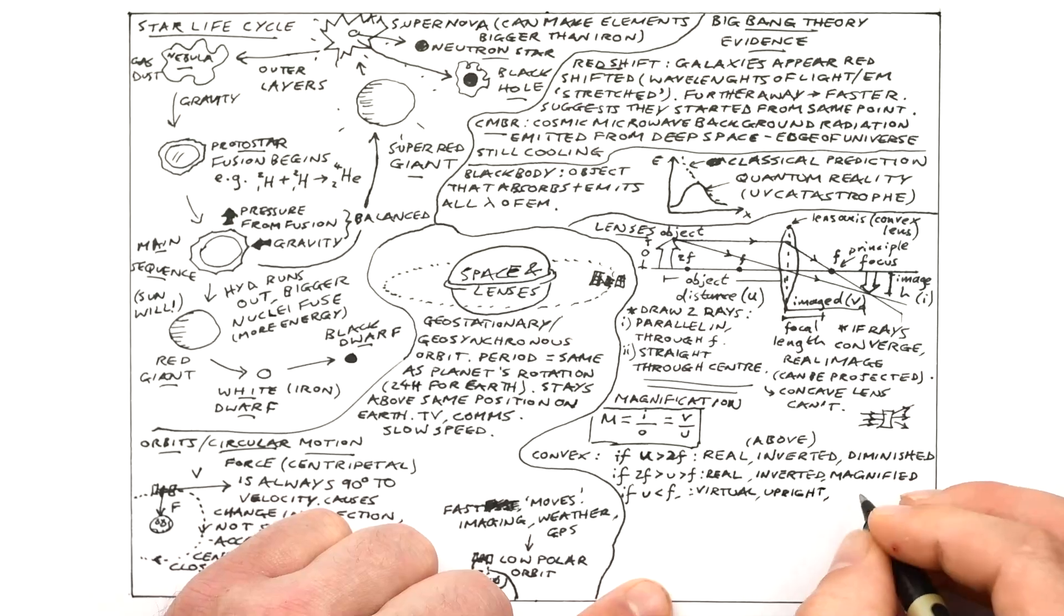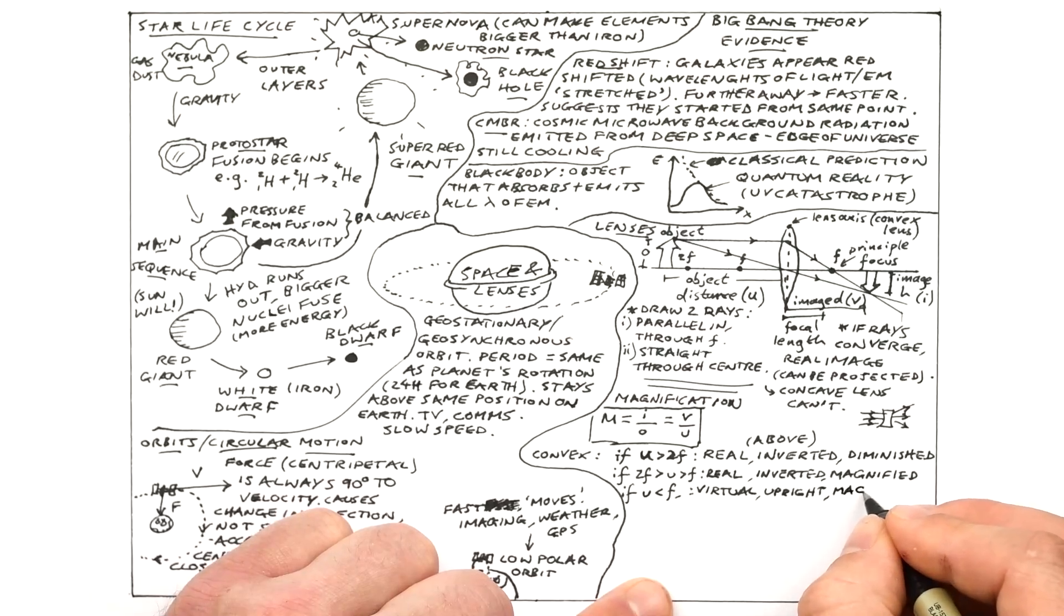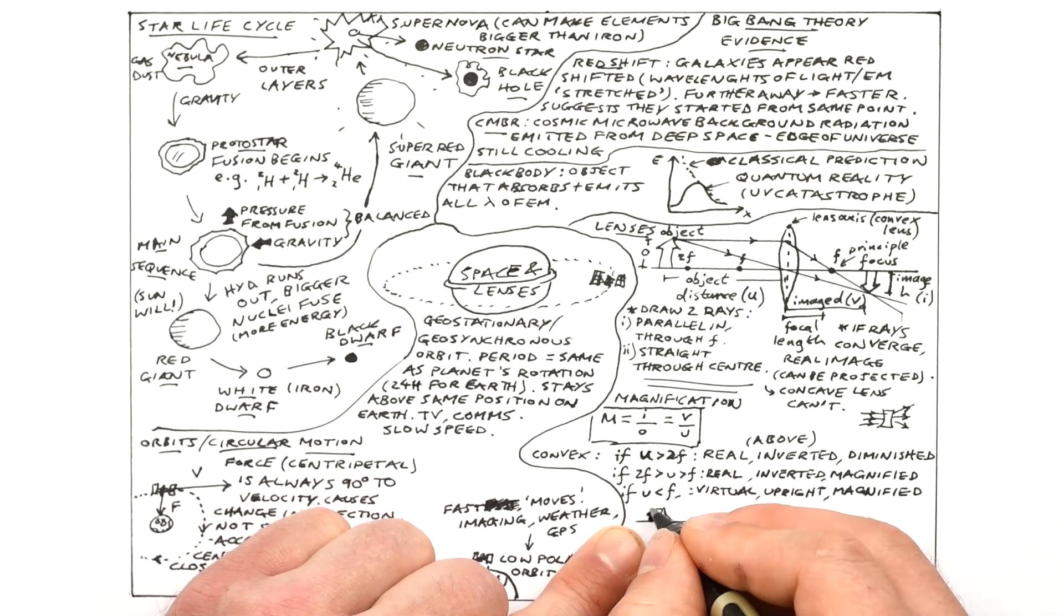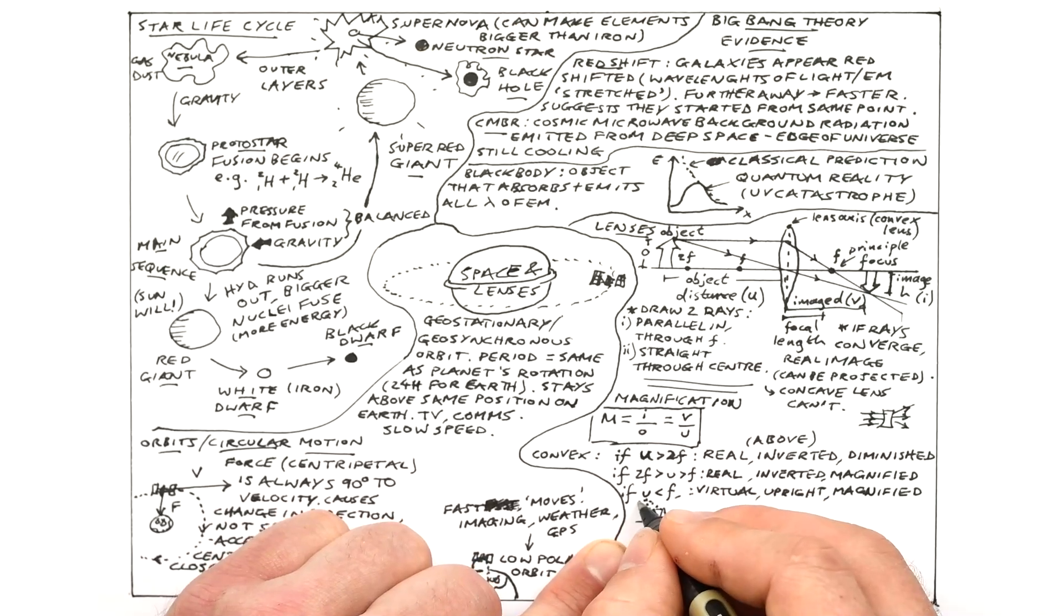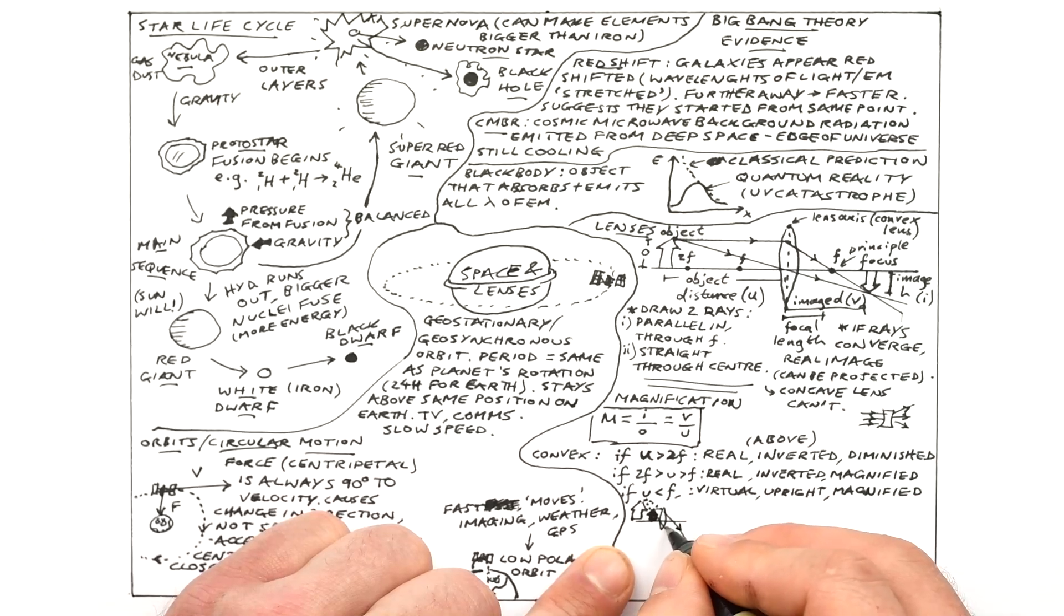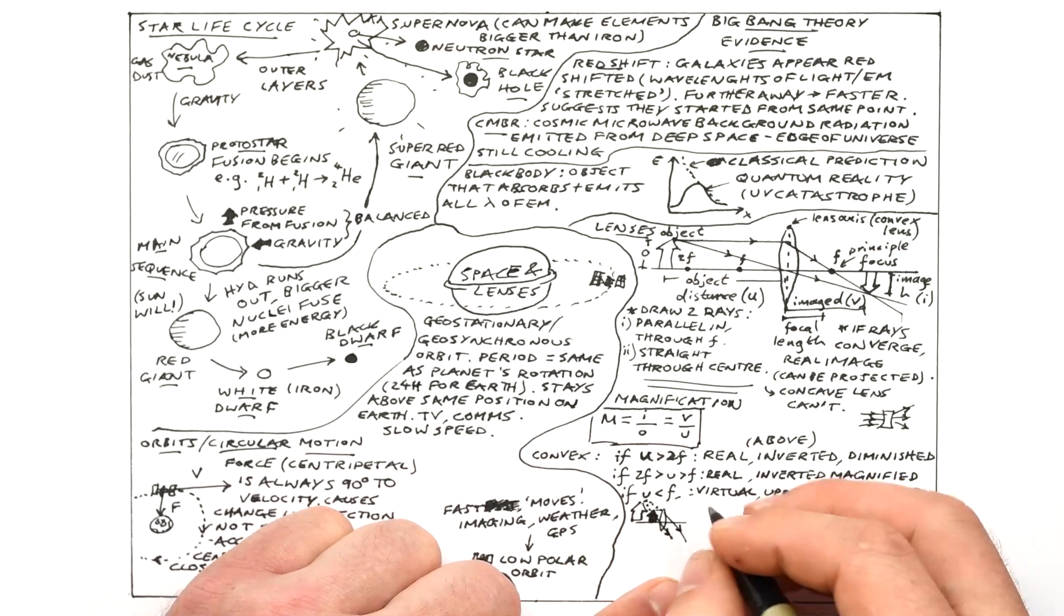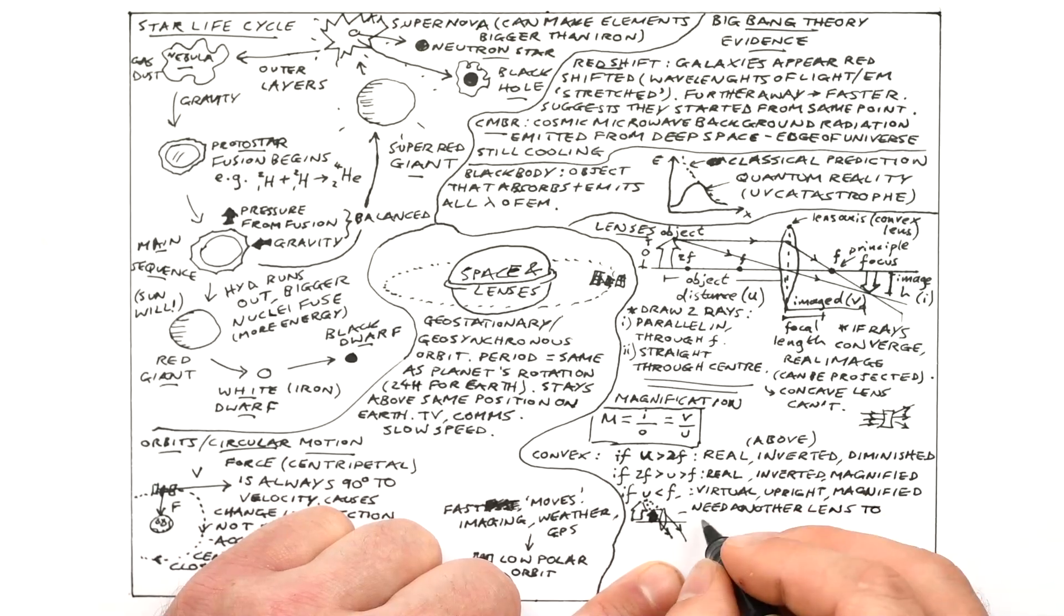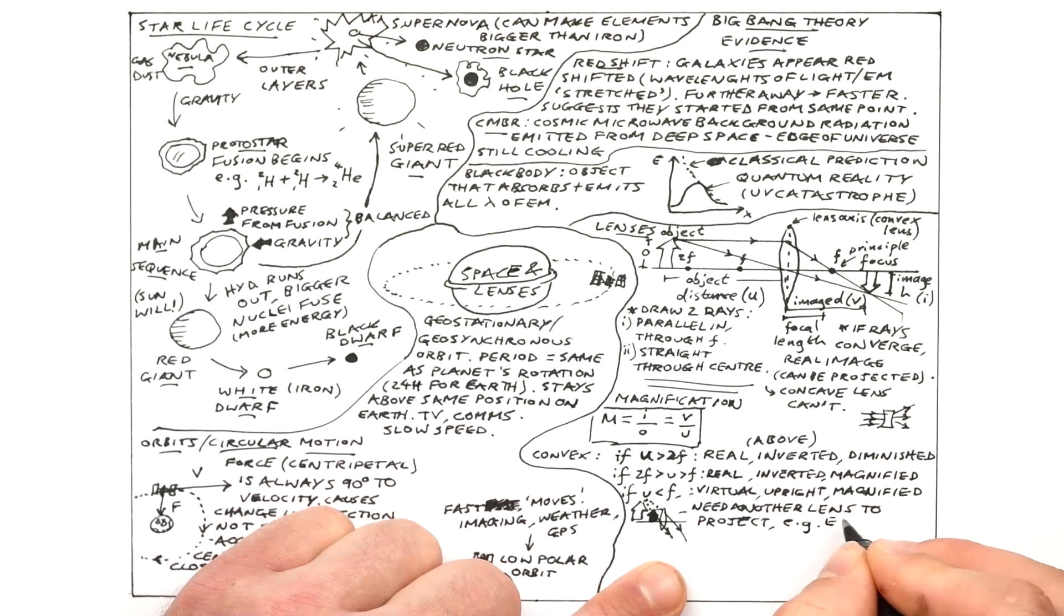However something weird happens. If the object is closer to the lens than F we end up with a virtual image. That ends up being upright and magnified. Draw a very small version of it here. The rays from the top of the arrow will diverge as they go out of the lens. But if we extrapolate those two rays backwards we can see where they do meet in theory on the wrong side of the lens as it were. And so we can see where this virtual image is going to be formed. What's the point of this? Well if these diverging rays go into your eye then you can see this virtual image because the lens in your eye is making them converge in the end. So you see the arrow as bigger. So this is what would happen with a magnifying glass for example.